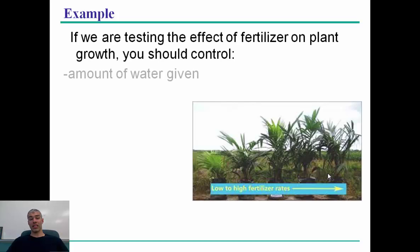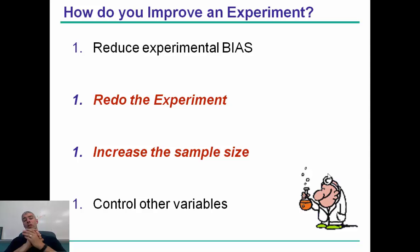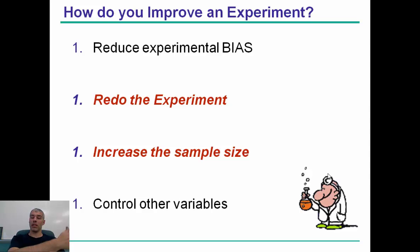Here are examples of things we're testing and controlling: fertilizer, water, sunlight, temperature, type of soil, and pH of the soil — all of those can have an effect. To improve an experiment, two answers are always correct: repeat the experiment over and over again, and increase your sample size. In both cases it makes your data more valid and less likely to be a fluke. You should also reduce experimental bias, and control other variables that weren't controlled for that could have had an effect.